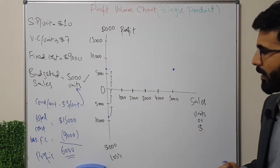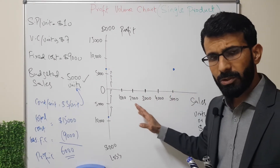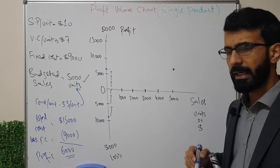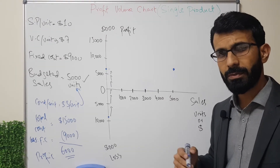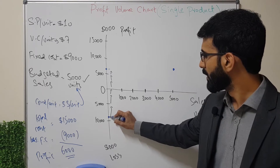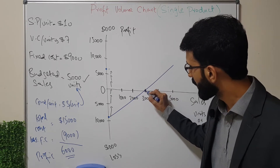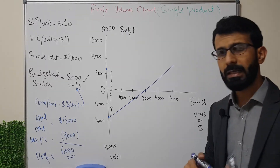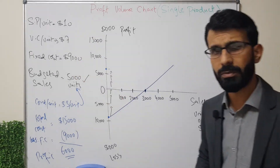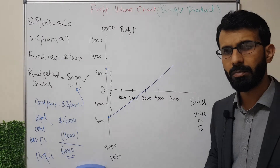We join these two extremes — the worst-case scenario at zero units and the best-case scenario at 5,000 units — and we can identify our break-even point. Approximately on the graph, the break-even point is at around 3,000 units, which matches our calculation: fixed cost of $9,000 divided by contribution per unit of $3 equals 3,000 units.